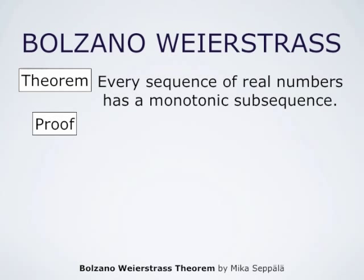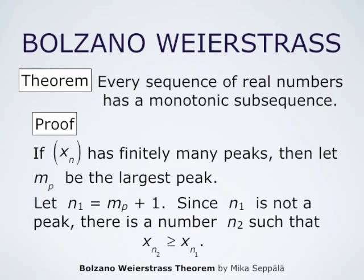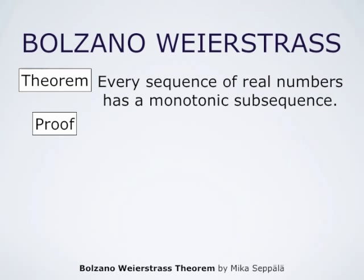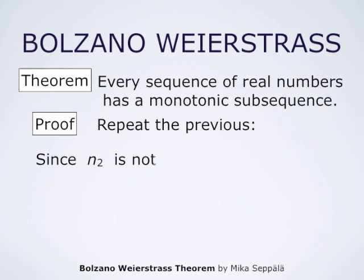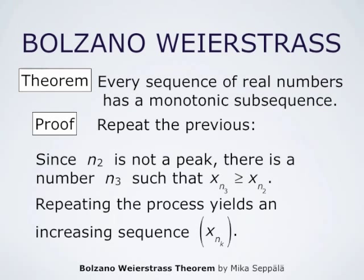If the sequence does not have infinitely many peaks, then it has finitely many peaks — let m_p be the largest peak. Since n1 = m_p + 1 is not a peak, there is a number n2 such that x_{n2} is greater than or equal to x_{n1}. Then n2 is larger than n1, so n2 is not a peak either, and there is a number n3 such that x_{n3} is larger than x_{n2}. Repeating this process, we get an increasing subsequence x_{n_k}. This completes the proof.